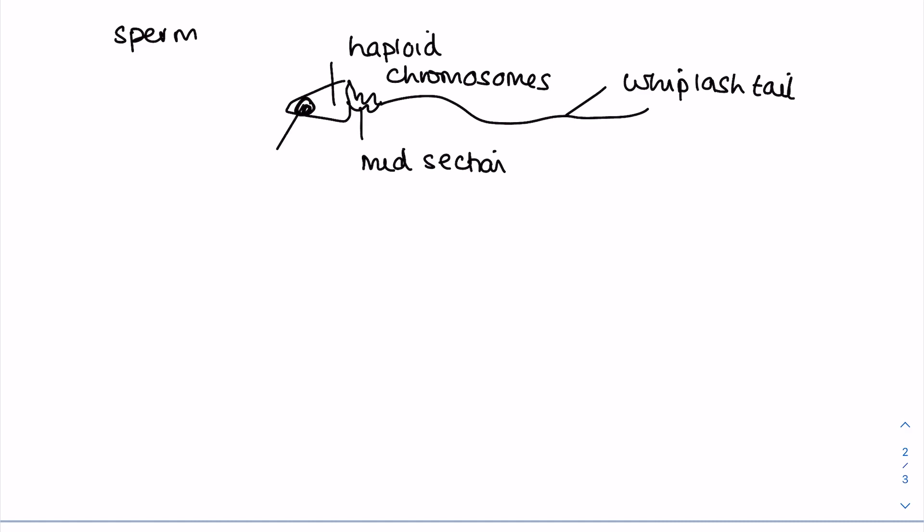Quick drawing here of a sperm. Now here is the whiplash tail that helps it to swim. In order to swim it will need lots of energy, so this midsection here is filled with mitochondria which release energy. Up here you have the head of the sperm which contains the genetic material, which in this case will be a haploid number of chromosomes. And then in the head of the sperm you find an acrosome which contains digestive enzymes needed to penetrate the outside of the egg.